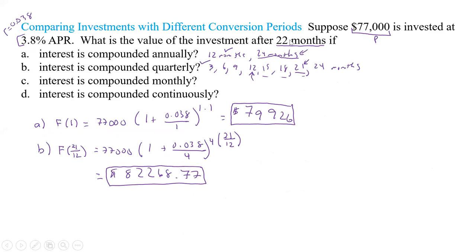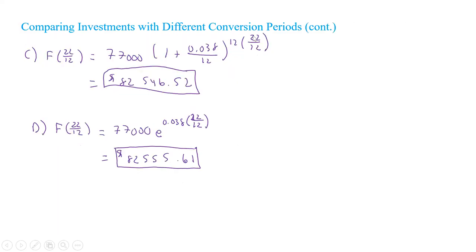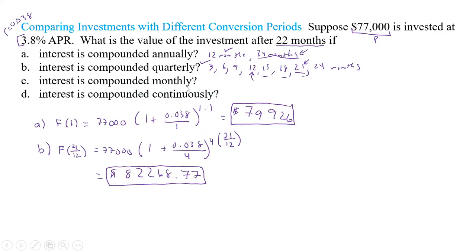The key takeaway: for 22 months, the monthly and continuous cases used all 22 months, but for annual we could only use 12 months (stopping short of 24), and for quarterly we could only use 21 months (the last completed quarter before 24). We had to carefully identify where each compounding period falls to make sure we used the right value of t.